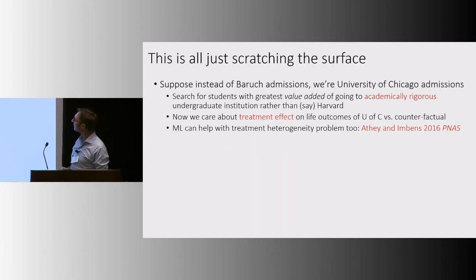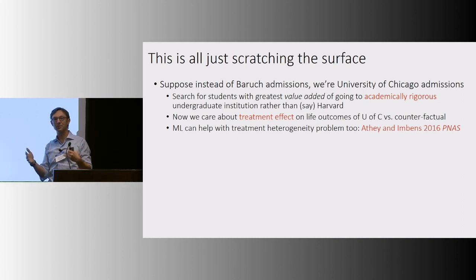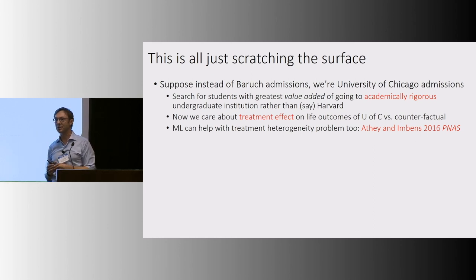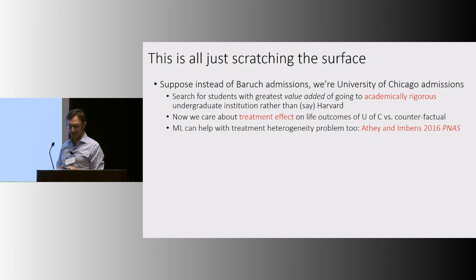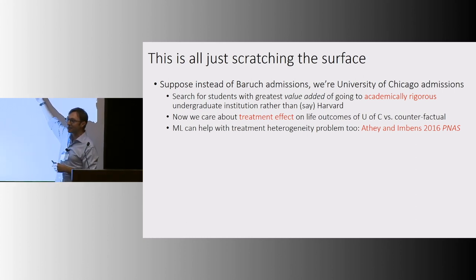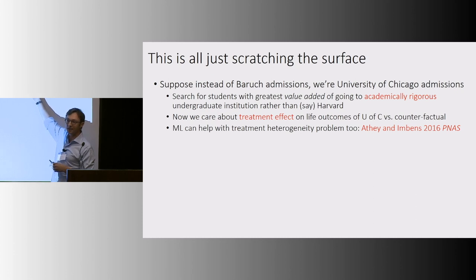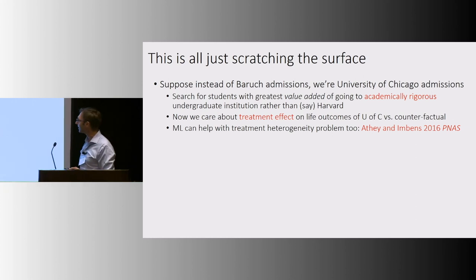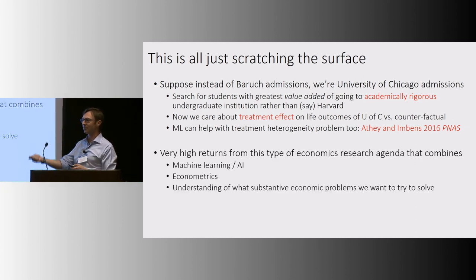This is just scratching the surface of the richness of problems even within the narrow situation of higher education. Imagine now you're an institution that doesn't just care about how kids will do at your institution — you want to find kids where having them come adds lots of value. All of a sudden, this is a treatment heterogeneity problem, and this is not something computer scientists have been working on. In contrast, Susan and Guido have a paper that in years, if not months, is going to become standard for program evaluation throughout economics. Very exciting line of research, and lots of other super interesting things for people to do here.